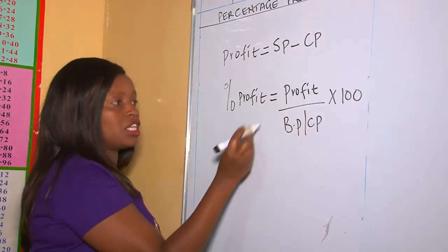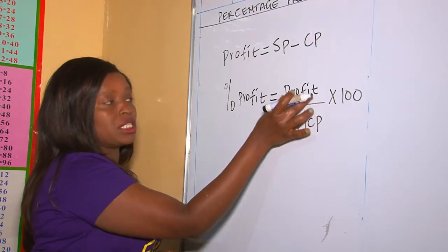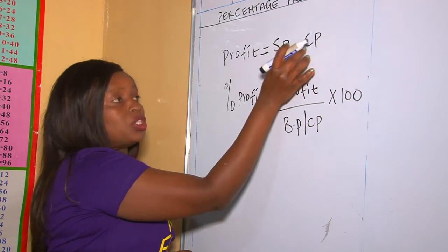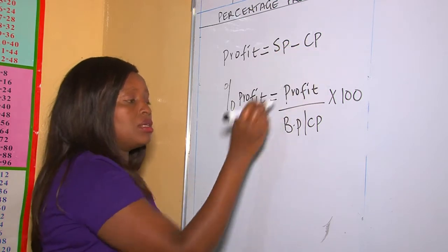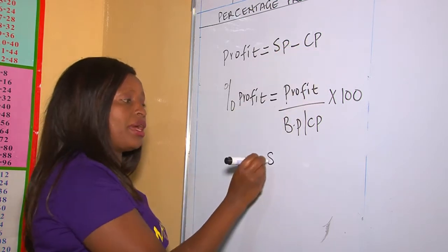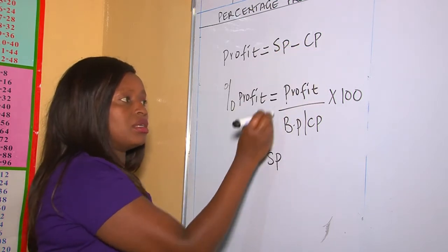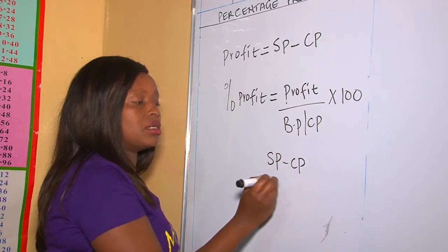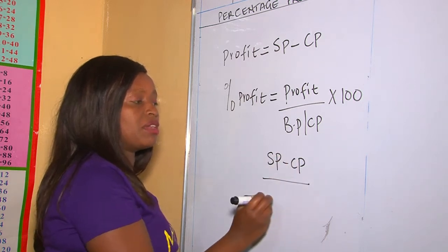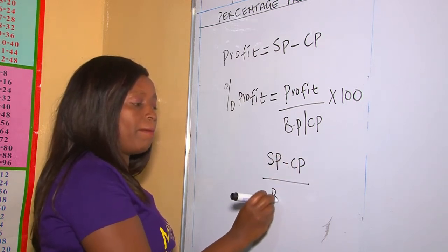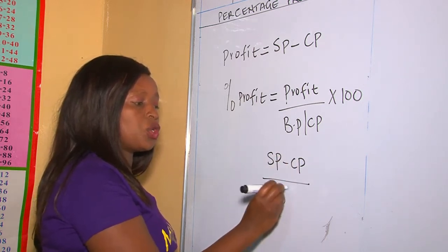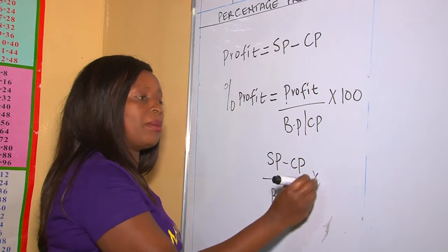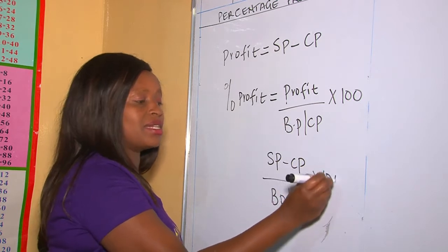Therefore, this profit itself is selling price minus cost price. So the formula is: percentage profit equals selling price minus cost price, all divided by the buying price — also called the cost price — multiplied by a hundred.